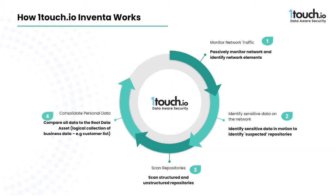All of this data is combined with a virtual catalog of individuals the company has a relationship with. We call that catalog a data asset, but you can think of it as a virtual group of customers, employees, or any other subset of humans with a defined business relationship to the company.